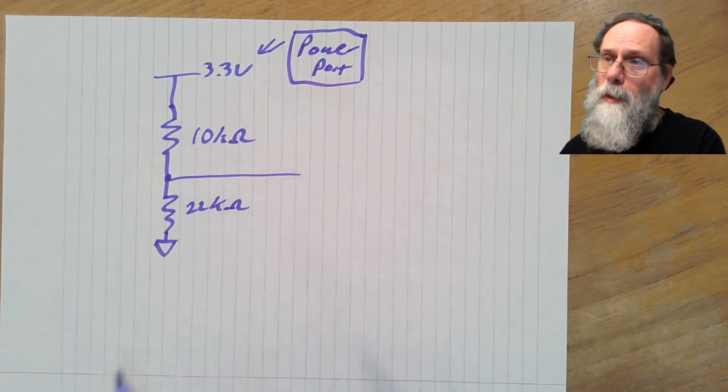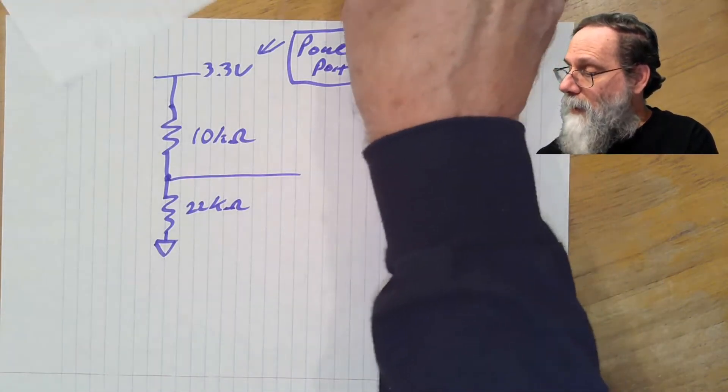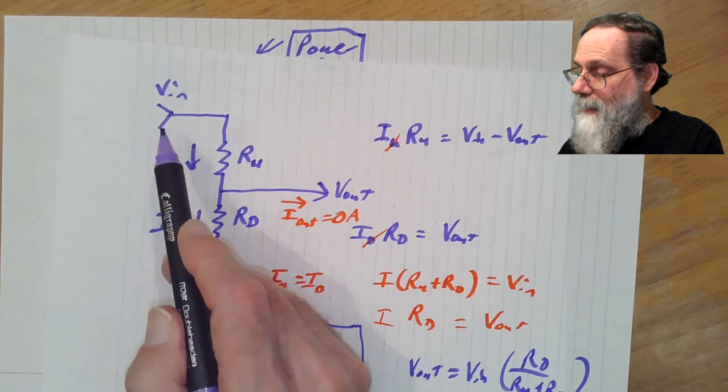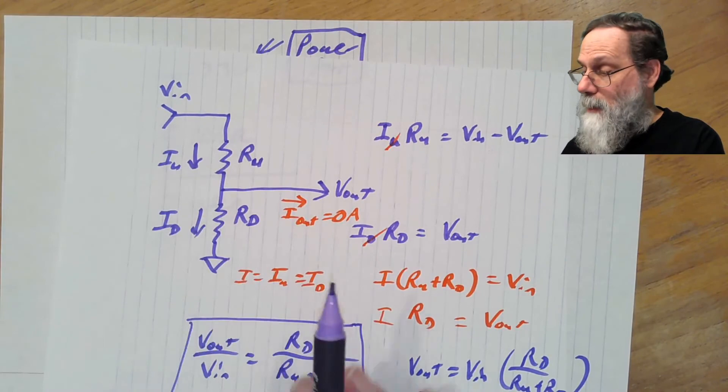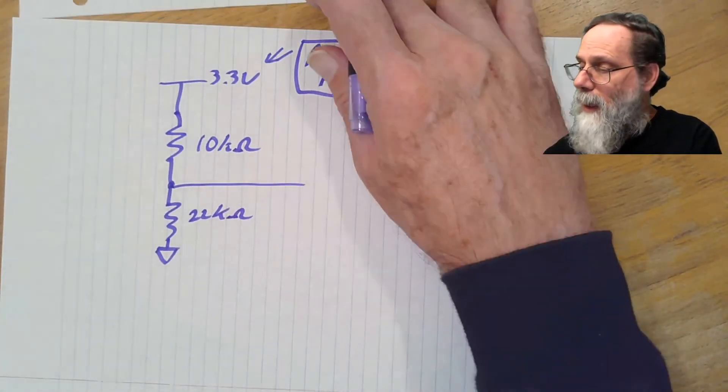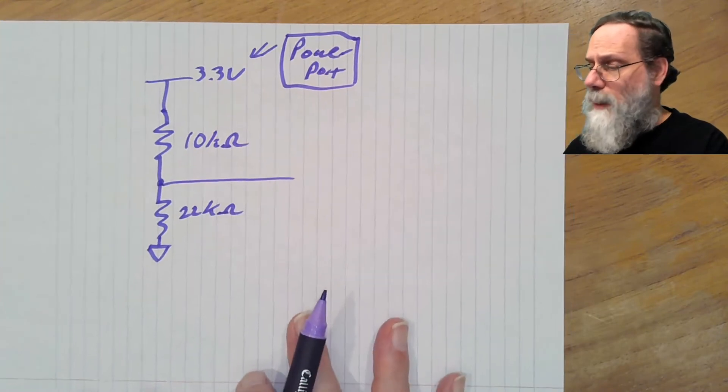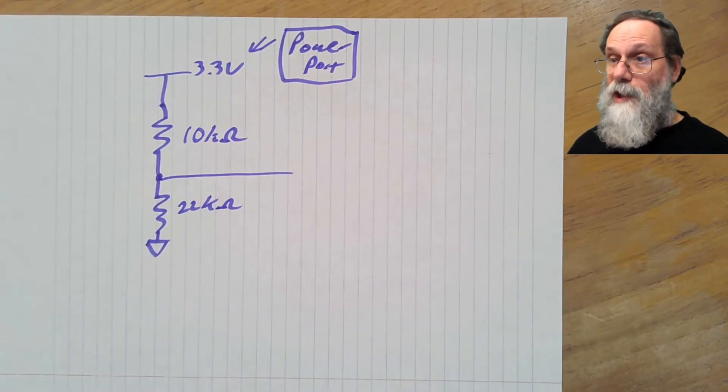The power port symbol is used when we have a constant voltage, particularly power supply voltage. And here I said this is an input port. That's the one we use where we have a variable input, something that carries information. When we've just got a constant, we use the power port symbol. And that helps us distinguish between our constants and our signals, the signals that actually change and carry information.